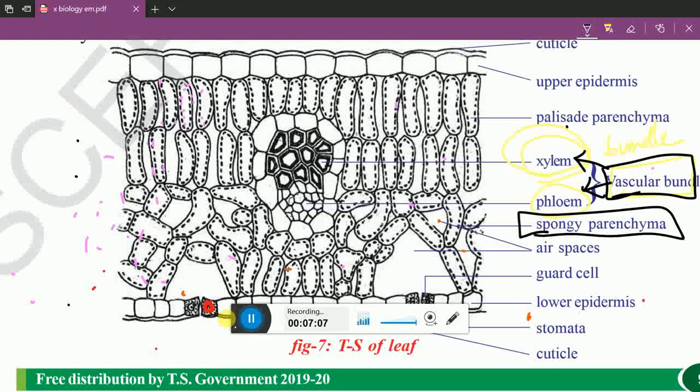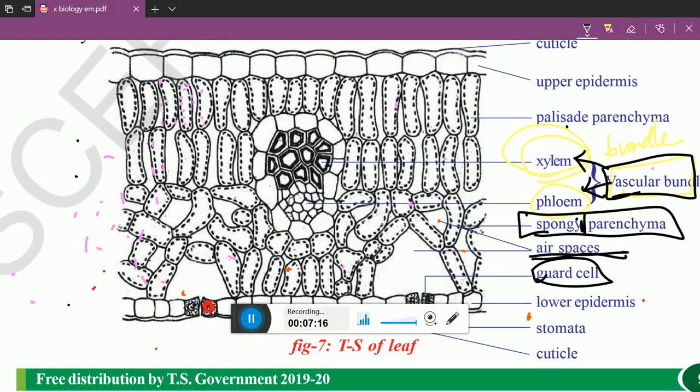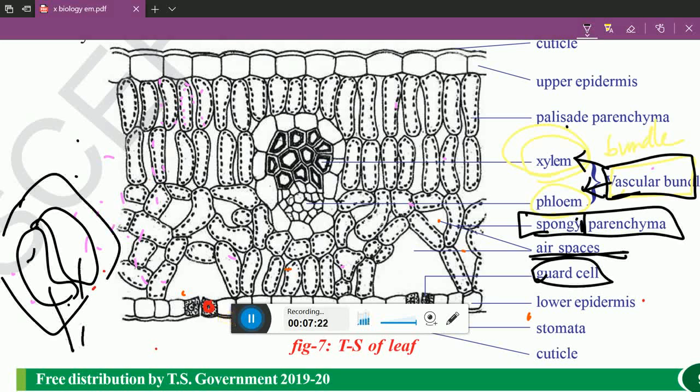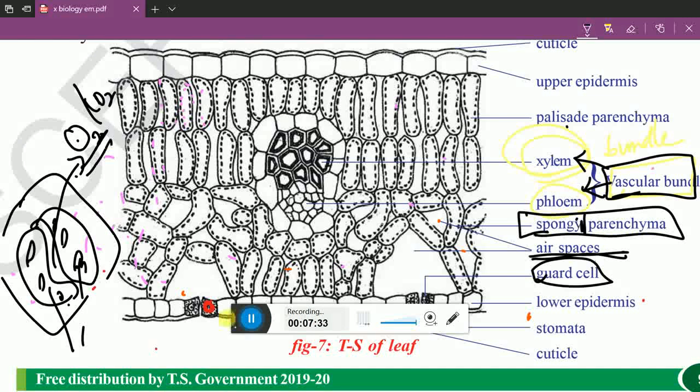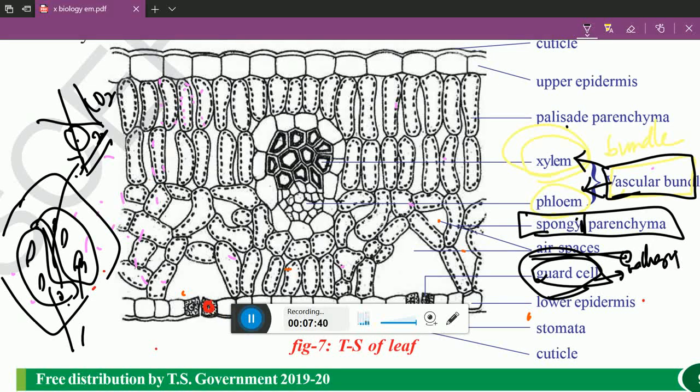About spongy parenchyma, it gives a cushion-like feature for the leaf and leaving air spaces. And guard cells are present here. Stomata consists of two guard cells which is filled with chloroplast. If it is open, air enters inside. Oxygen or carbon dioxide exchange will be taken. And if it is closed, then no exchange will be taken. Guard cells will help in exchanging of gases.